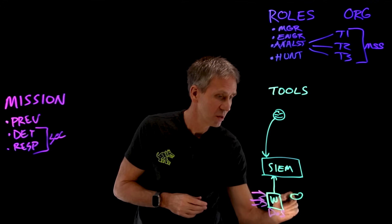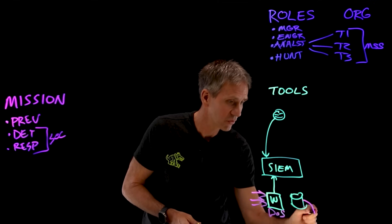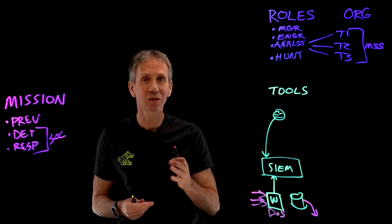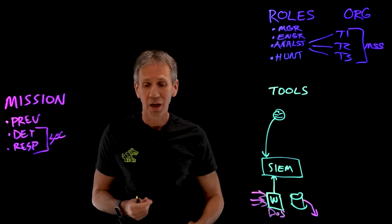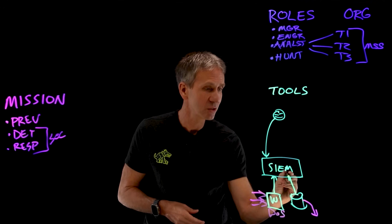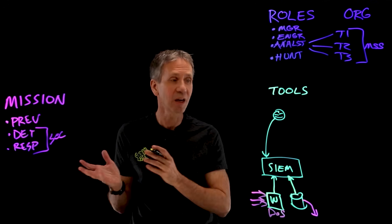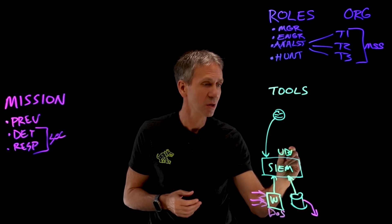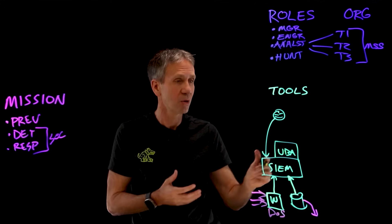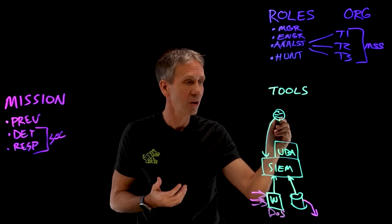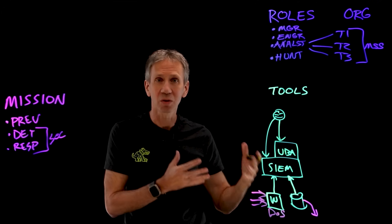In our second scenario, we have a database with critical information, and someone is exfiltrating that data — taking data out of the system and sending it out into the network. We'd like to detect that there's an anomalous level of activity, either accessing or sending data out. A technology called user behavior analytics runs along with the SIEM to figure that out, sending an alarm so the SOC analyst can use that system for further investigation.